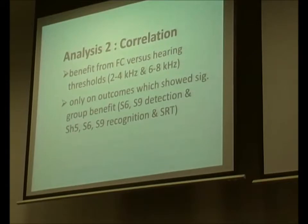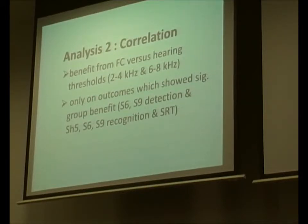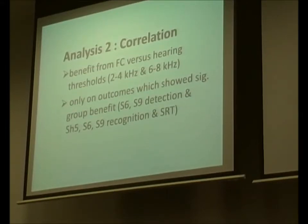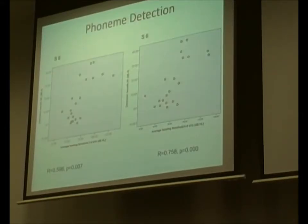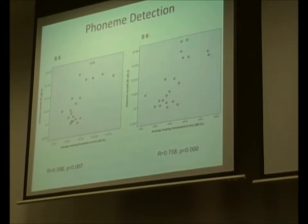The second way I analysed the data was a correlation. With 21 participants, I used scatterplots to see how hearing thresholds compare to benefit. I chose two predictor variables: hearing threshold at 2 and 4 kHz — the area where the compressed output signal lands — and hearing threshold at 6 to 8 kHz, which is the frequency area not well amplified by traditional hearing aids. I only did this for outcomes that showed a significant group benefit. Significant relationships were found between the /s/ detection at 6 kHz and thresholds at both 2–4 kHz and 6–8 kHz.